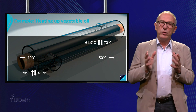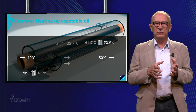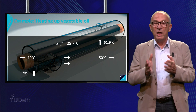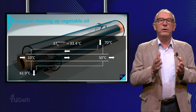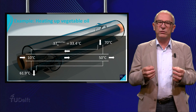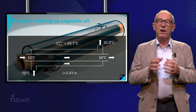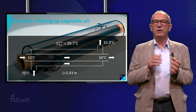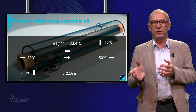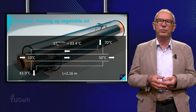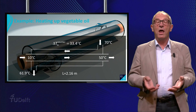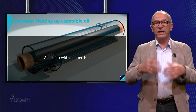Subsequently, we calculate the logarithmic mean temperature difference for both situations. For co-current flow delta TLM becomes 29.7 degrees Celsius, and for countercurrent flow 33.4 degrees Celsius. The larger temperature difference shows that countercurrent is more effective than co-current. Finally, we need 2.43 meters to heat up the oil co-currently and 2.60 meters for countercurrent flow. This is an example for one tube, but it illustrates how you can design the size of a heat exchanger with the knowledge learned in recent weeks. Good luck with the exercises and thank you for your attention!